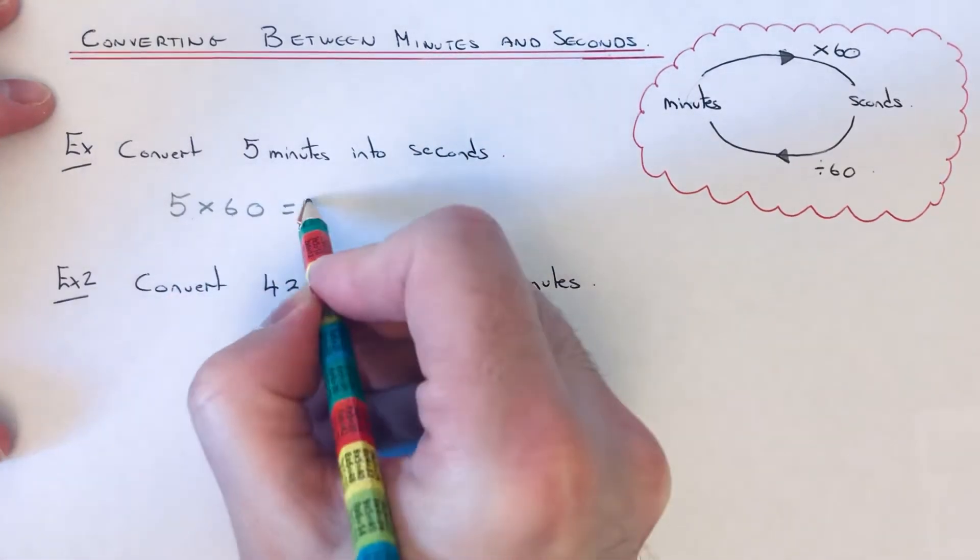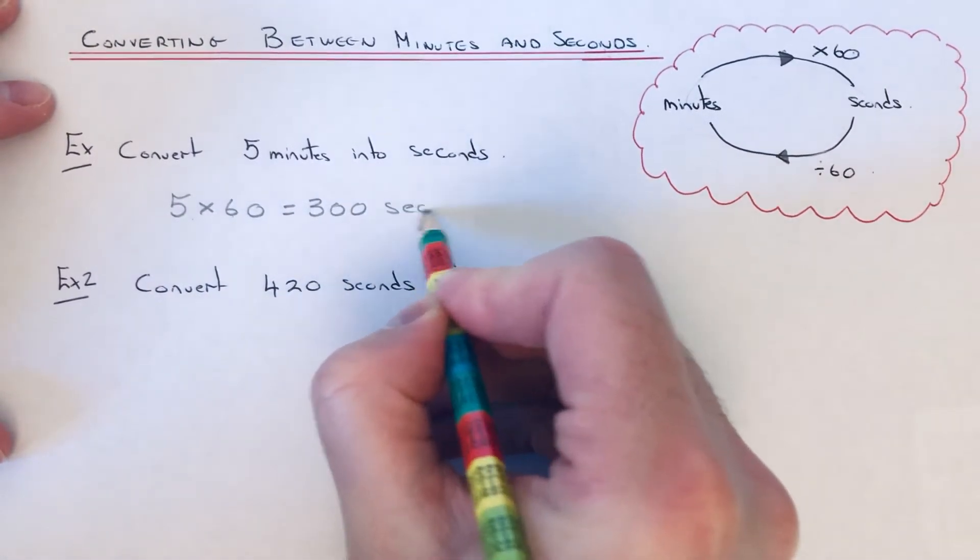So 5 times 6 is 30, and then just put the zero on, so we get 300 seconds.